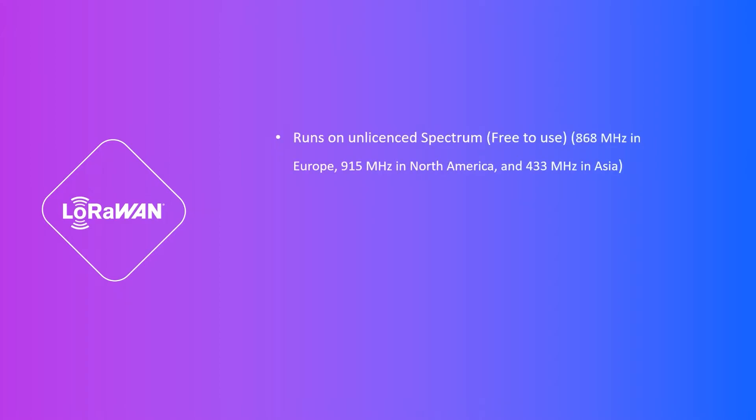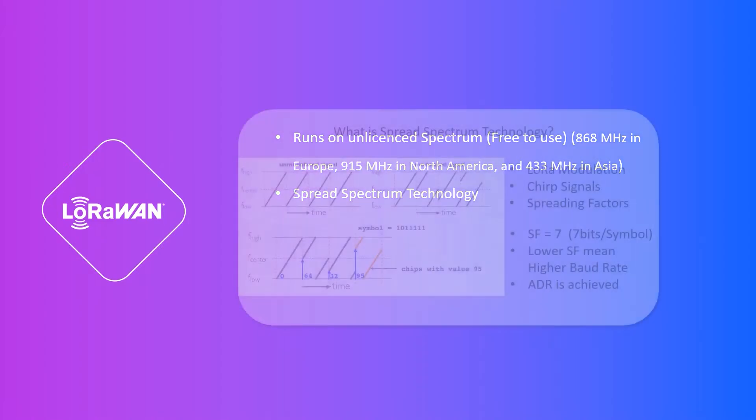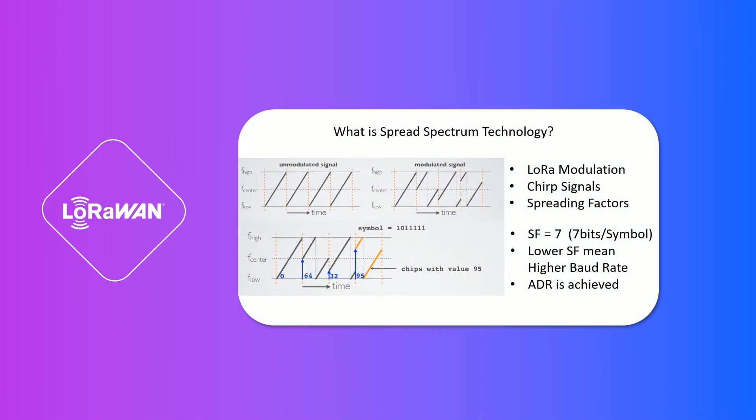So LoRaWAN runs on unlicensed spectrums. It uses spread spectrum technology. This lays the foundation of LoRaWAN's key features of wide coverage and low power consumption. So what is exactly spread spectrum technology?